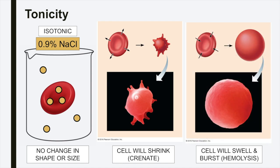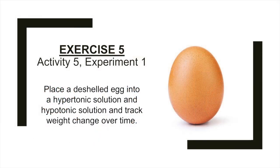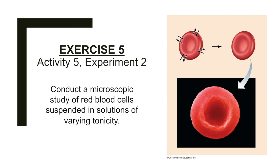In activity five, experiment one, you'll place an egg into a hypertonic solution of 30% sucrose and a hypotonic solution of distilled water, and you'll track the egg's weight change over time. Based upon the discussion we just had, what do you think will happen to the egg when placed in each solution? In activity five, experiment two, you'll conduct a microscopic study of red blood cells when suspended in physiological saline, distilled water, and a 5% sodium chloride solution. Based on our discussion, what do you think will happen to the blood cells when placed in each of these solutions?